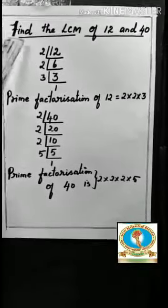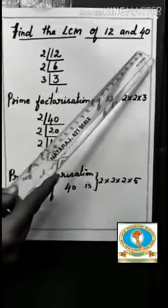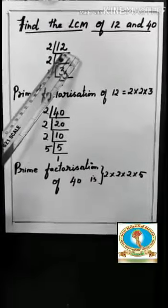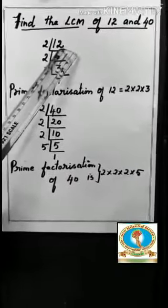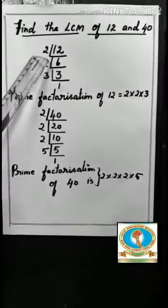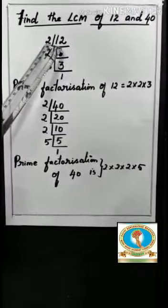Now let us find the LCM of 12 and 40. First start with 12. Here 12 is an even number so we can divide by 2 which is the least prime number.